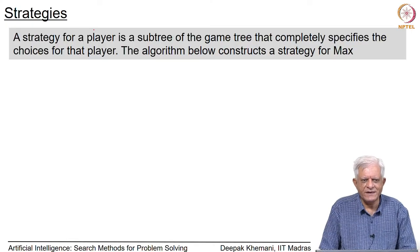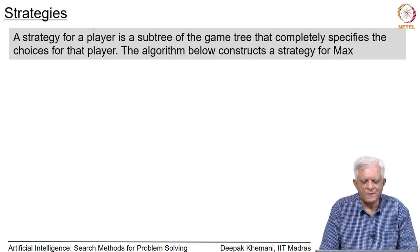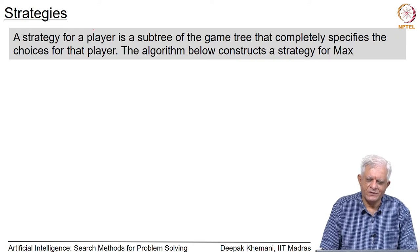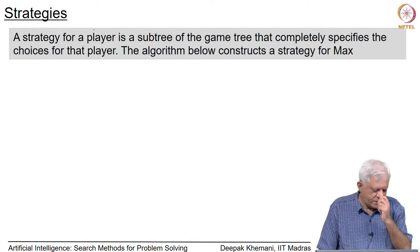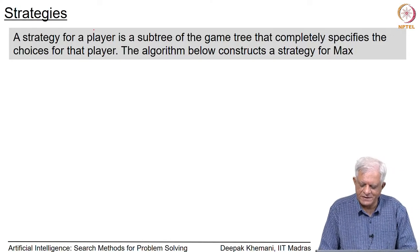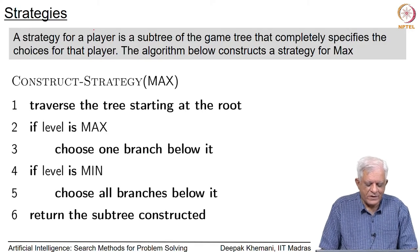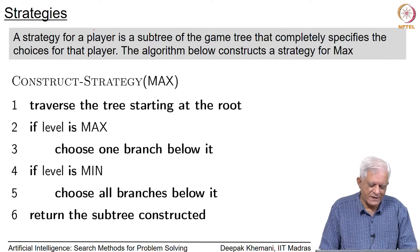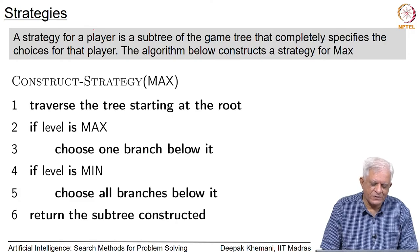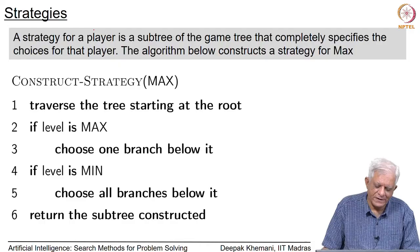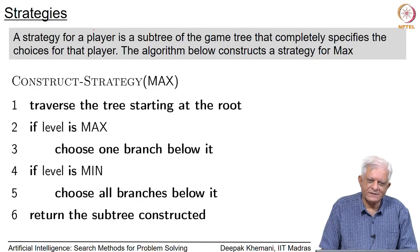Because you do not know what the opponent will do, you cannot decide for the opponent, so you have to consider all possible choices for the opponent. This is how a strategy is constructed, and we look at it from Max's perspective since we are writing a program for Max. Here is a small procedure for constructing a strategy for Max: start traversing the game tree from the root, going down level by level. At a Max node, choose one branch below it. At a Min node, choose all branches below it. Return the sub-tree constructed.